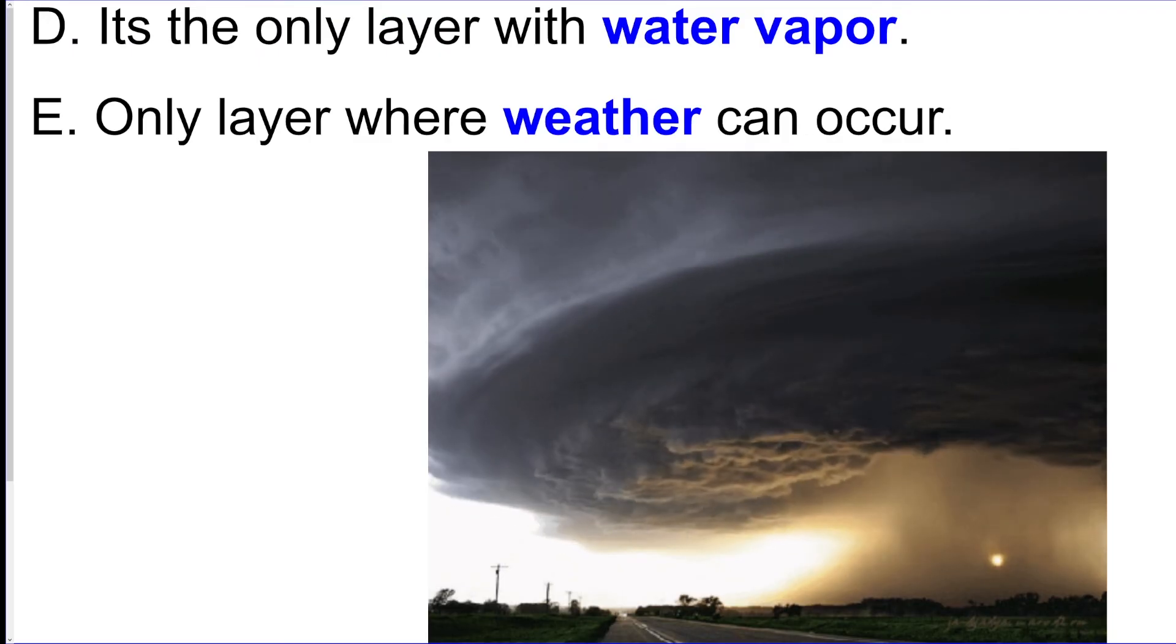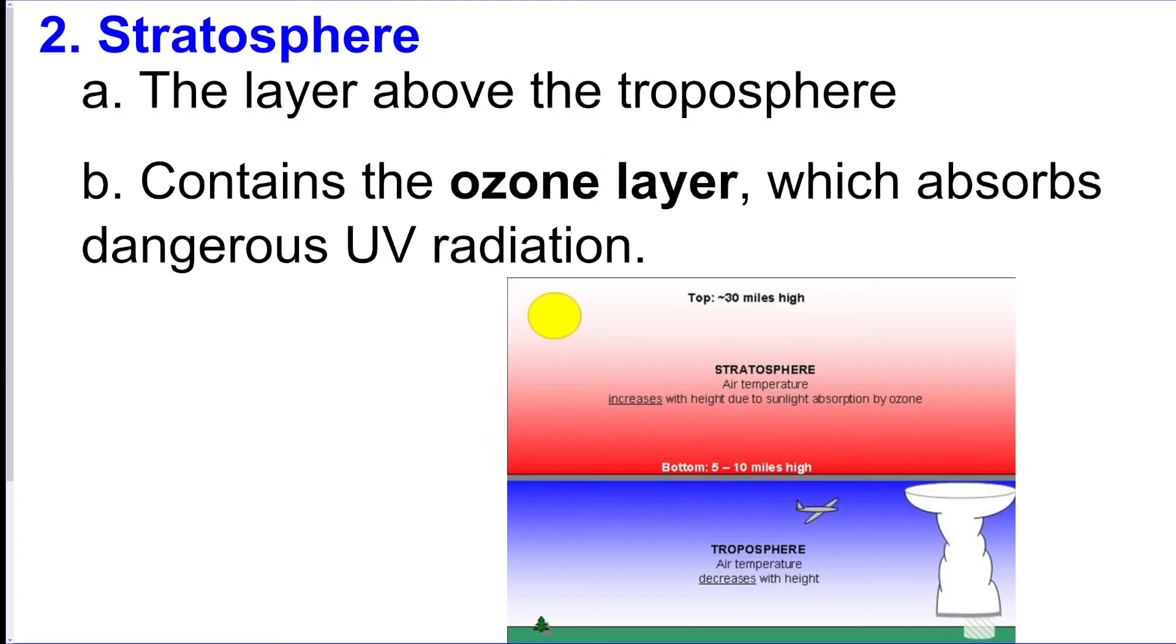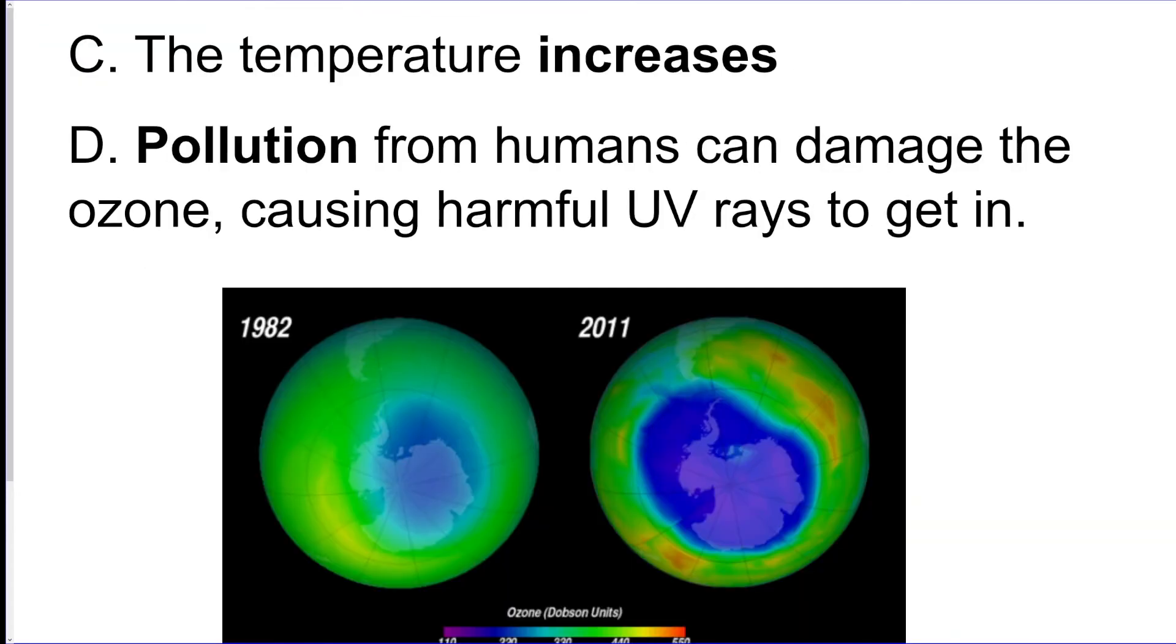The stratosphere is the layer above the troposphere. That's where your ozone is that's going to protect us from all that harmful UV radiation from the sun. The temperature gets warm here. And unfortunately, pollution actually destroys this ozone layer, which actually causes more UV to get in. So we want to cut down on pollution to try to rebuild that ozone layer.